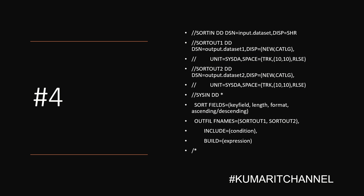Number four is an OUTFIL type sort card. Everything remains the same — we are trying to sort — but you can see here we have one input file but multiple output files. Earlier we had one input file and one output file. Here we are trying to split the input into multiple output files, and for that we use OUTFIL. We specify sort fields — which field you want to sort, the length of that field, the format, and whether it's ascending or descending order. Then comes the OUTFIL file name.